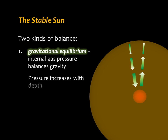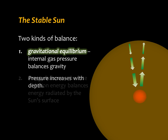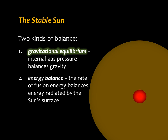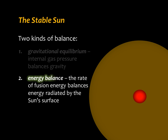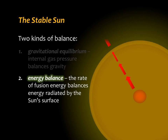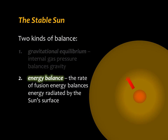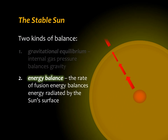Because the weight of the overlying layers is greater as we look deeper into the sun, the pressure must increase with depth. The second kind of balance is the energy balance between the rate at which fusion produces energy in the core and the rate at which the sun's surface radiates this energy into space.